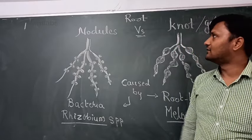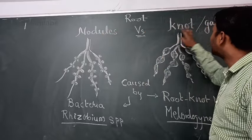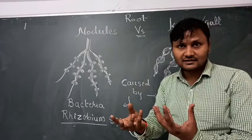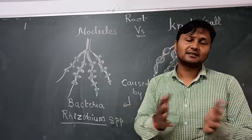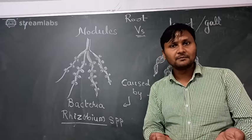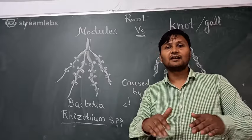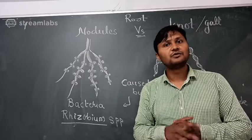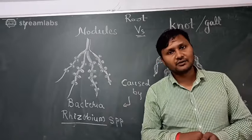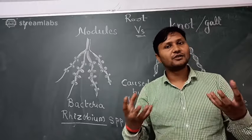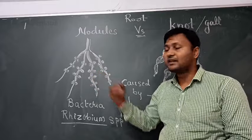What is the difference between root nodules and root galls? Are they the same or different? Many times students are confused about galls, and farmers are also confused when we talk about root knot disease. We say this disease is caused by root knots and forms galls on the roots. They are confused because in legume crops there are beneficial galls or nodules.